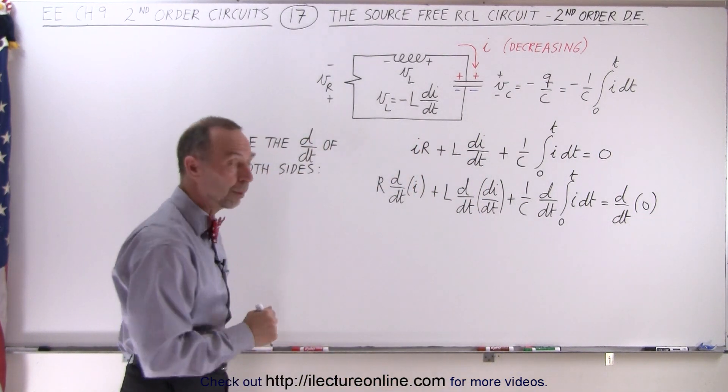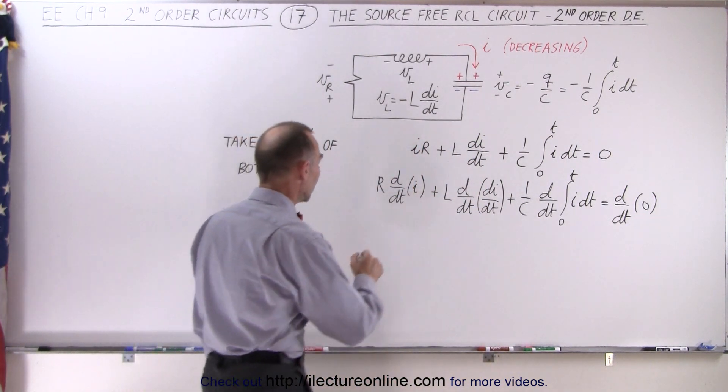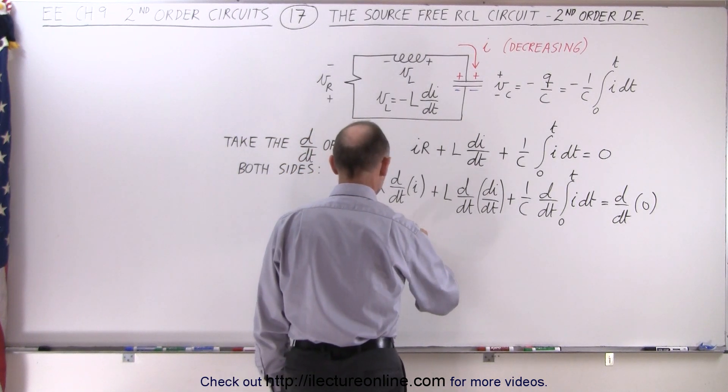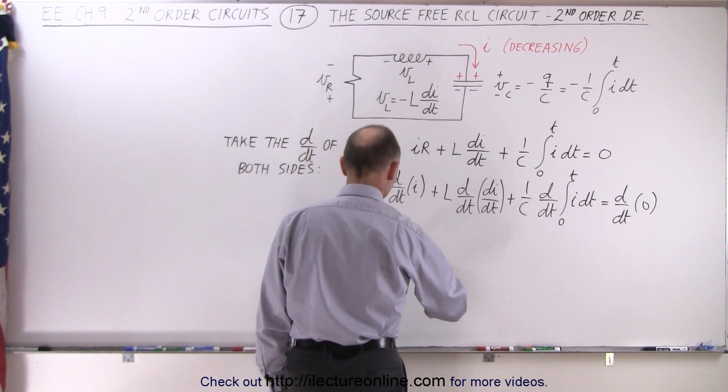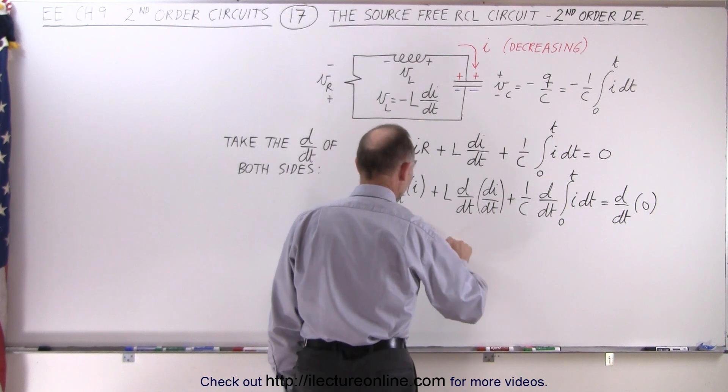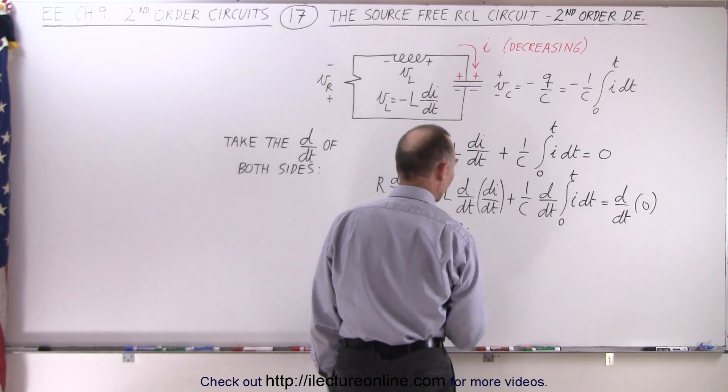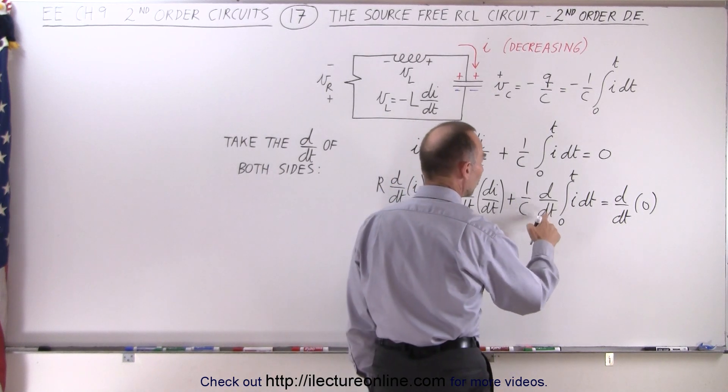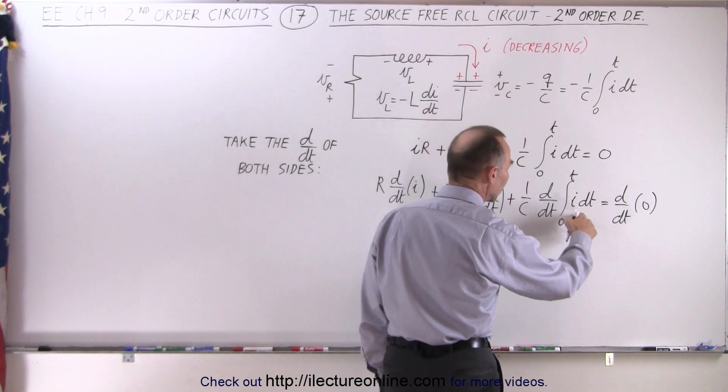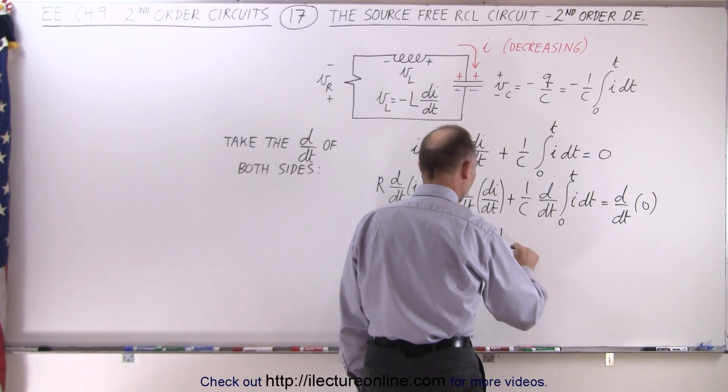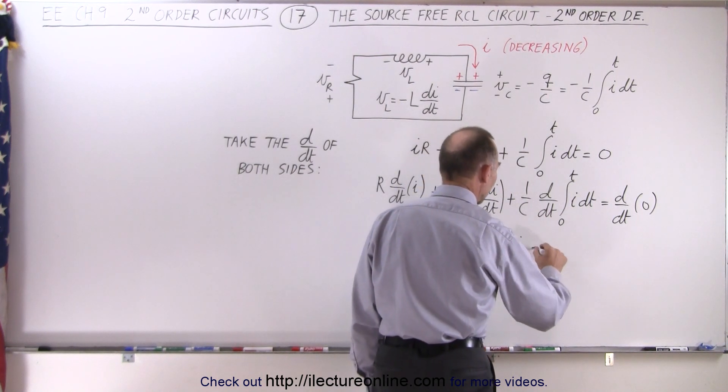Now let's see what the equation looks like when we're done. Here we end up with R times dI/dt, plus L times the second derivative of I with respect to time. Here we can see that the derivative will negate the integral, and this becomes 1 over C times I equals zero.